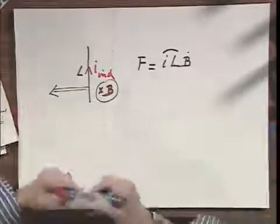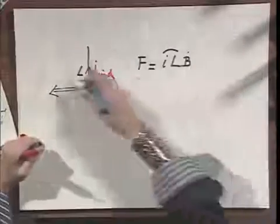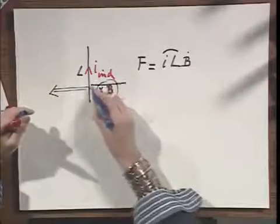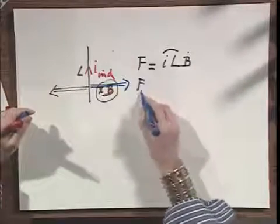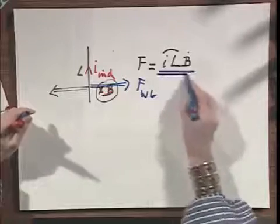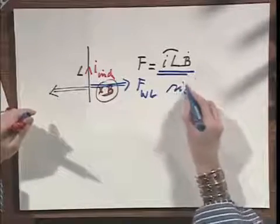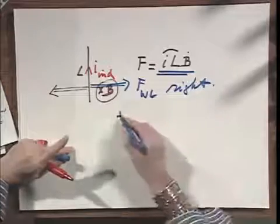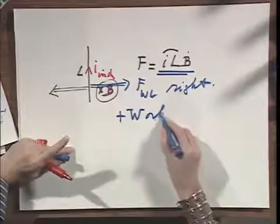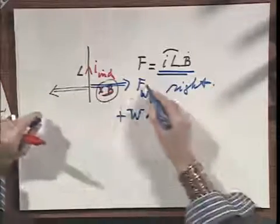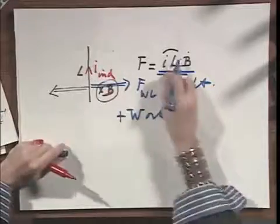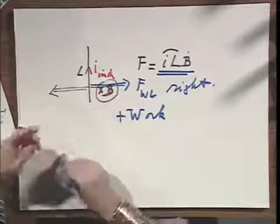But I, Walter Lewin, have to push this in, have to pull it in. So my force, F Walter Lewin, is in magnitude the same, but it is to the right. And therefore, notice that I do positive work. I do positive work because the force is to the right and I'm dragging it to the right. That's one way of doing it.